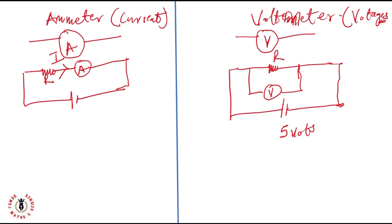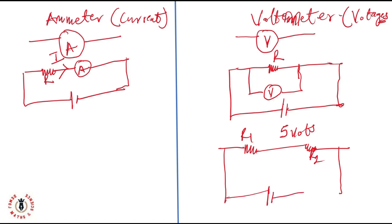Another good example: if I have two resistors R1 and R2 with a voltage source V across both of them, and I'm interested in the voltage across any one of them, I simply connect my voltmeter in parallel to that particular resistor. If I want to measure the current in this circuit, I connect my ammeter in series. With that, you've seen how we use both ammeters and voltmeters in electric circuits.